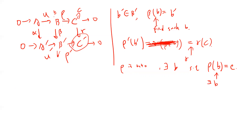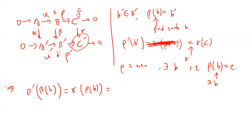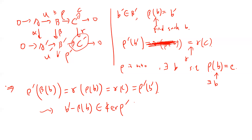Finding such a b does not yet guarantee that β(b) = b'. We verify: ρ'(β(b)) = γ(ρ(b)) = γ(c) = ρ'(b'). So ρ'(b' − β(b)) = 0, meaning b' − β(b) belongs to the kernel of ρ'. By exactness, the kernel of ρ' equals the image of μ'.